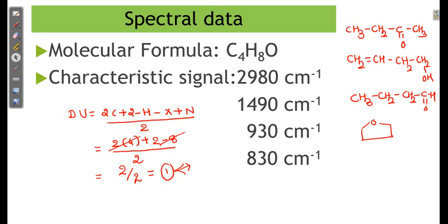Now we will see one by one what the problem is with each structure. The 2980 cm⁻¹ signal is characteristic of SP3 carbon-hydrogen bonds. The 1490 cm⁻¹ signal is characteristic of carbon with a heteroatom - it could be carbon with oxygen, nitrogen, or sulfur around 1500 cm⁻¹. Based on the molecular formula, we have only the carbon-oxygen possibility.